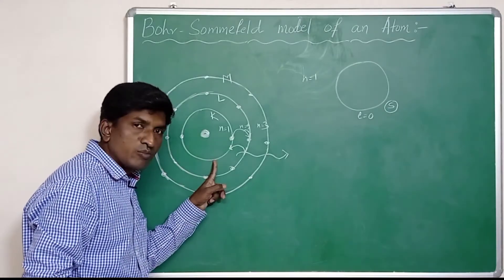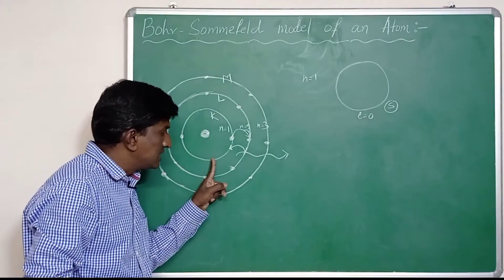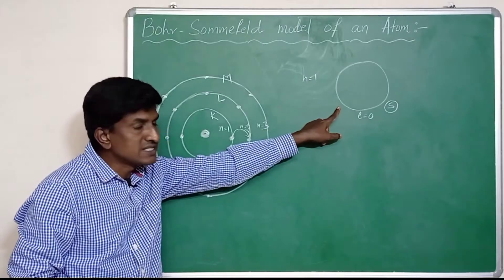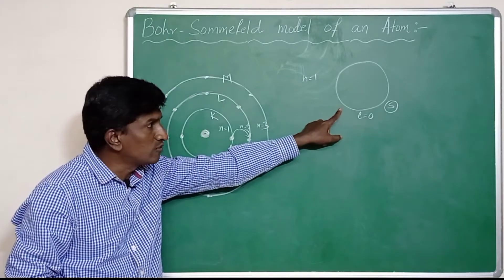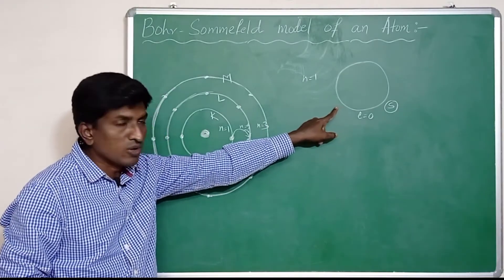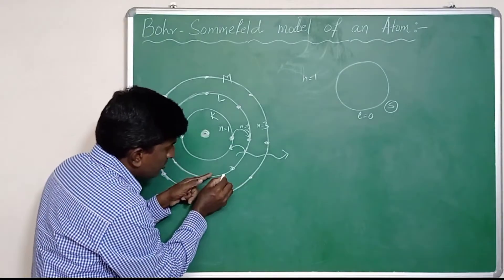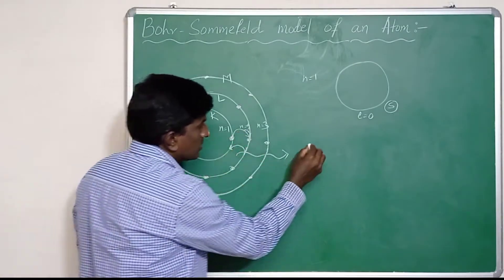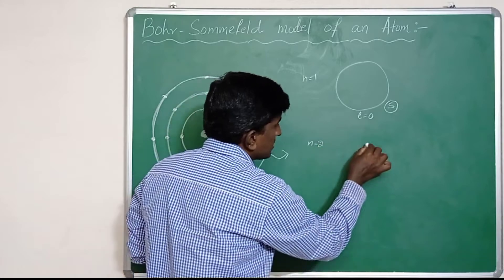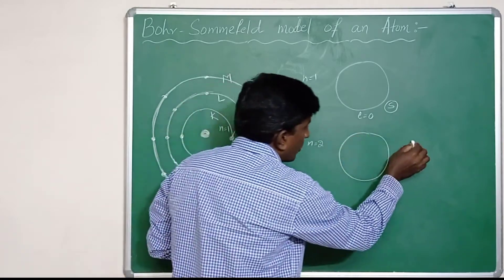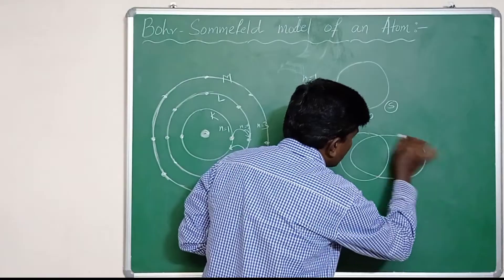For the second Bohr orbit, n equal to 2, Sommerfeld added one elliptical orbit to it. So this is l equal to 0, s subshell, and the elliptical one is l equal to 1.